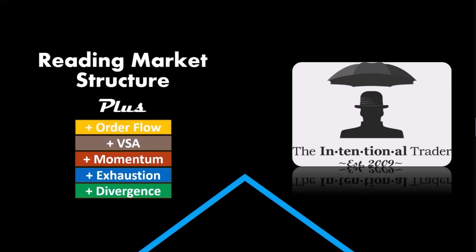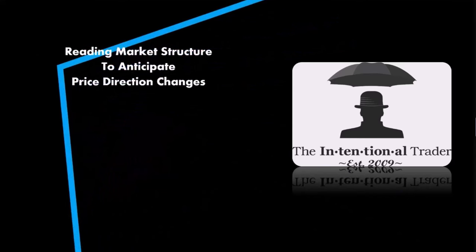We're talking about reading market structure and how we add different styles of information gathering — order flow, volume spread analysis, momentum, exhaustion, divergence. That's all gathering information to help us better understand what's happening in the market now so we can anticipate what's likely to happen next. That is trading — that's the crux of it.